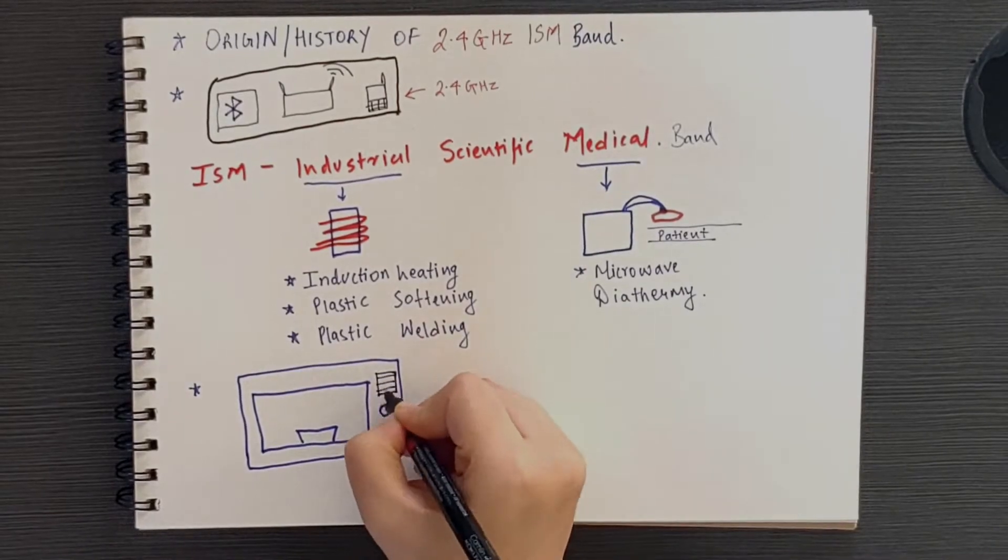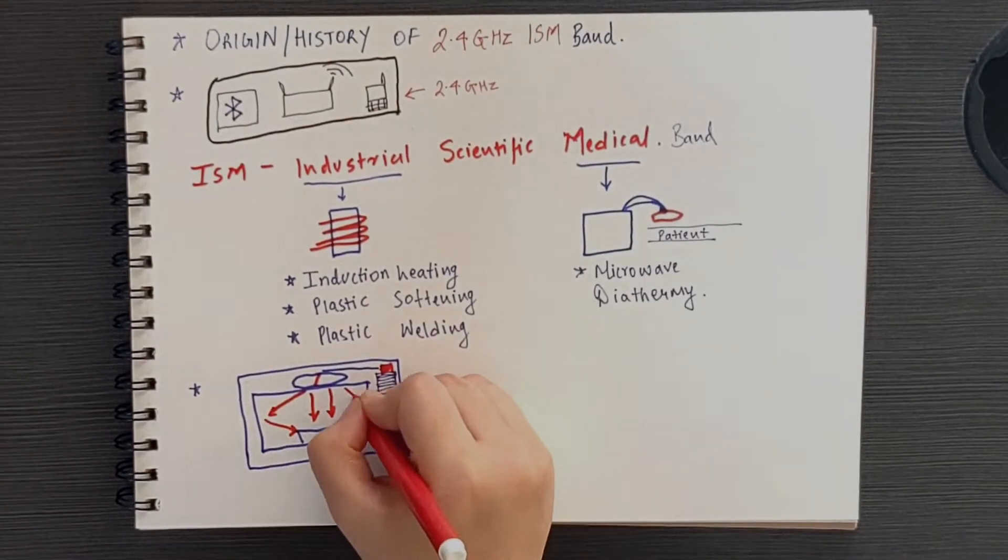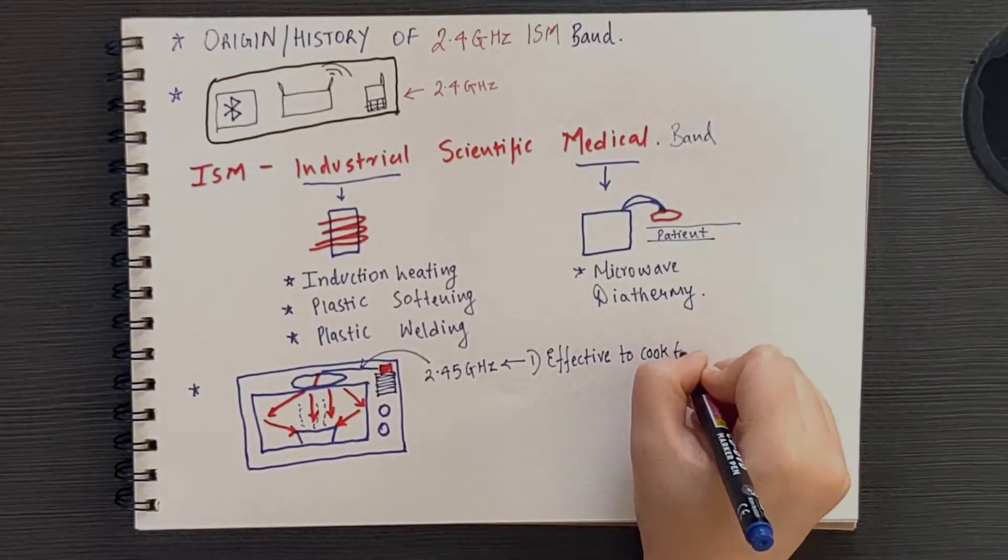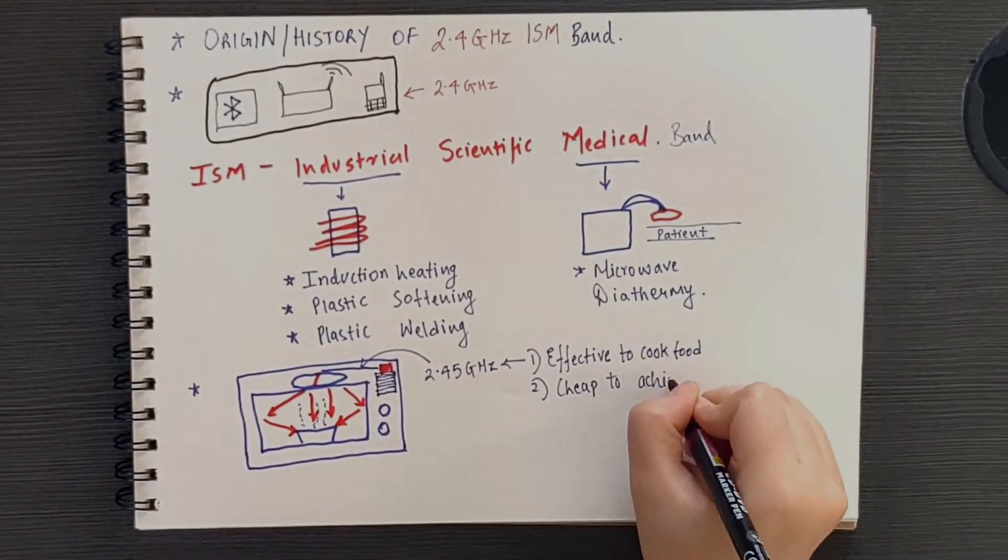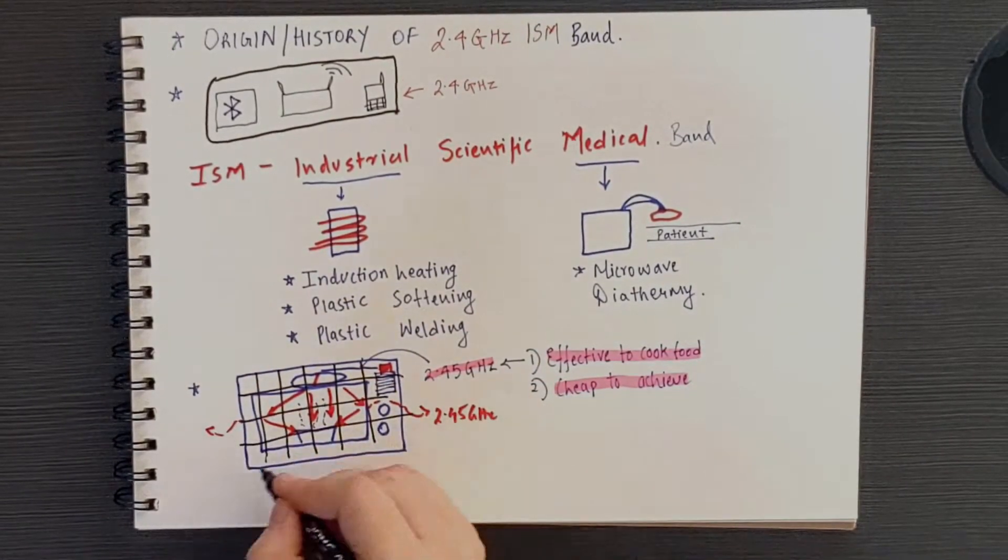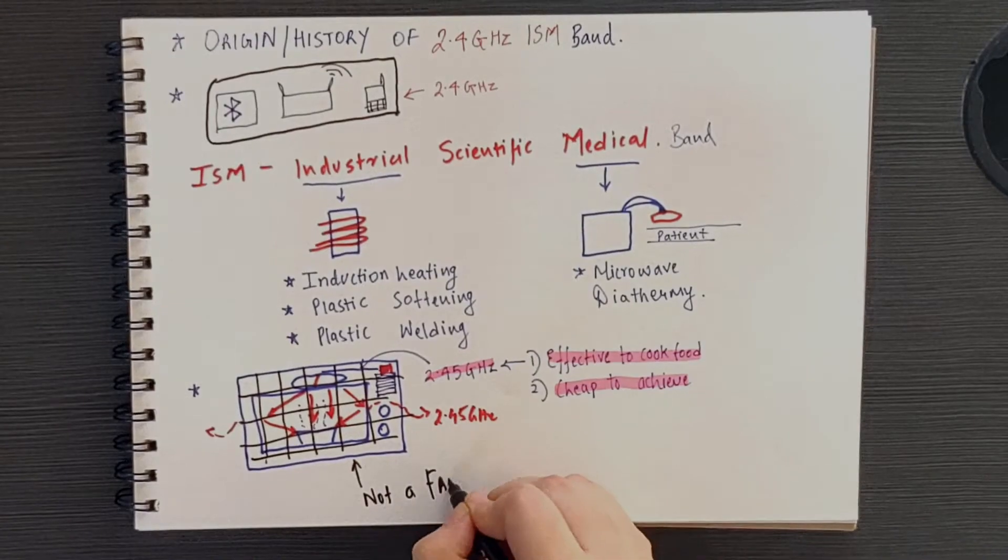The magnetrons in domestic microwave ovens emit microwaves at 2.45 GHz. This frequency is used as it is both effective in cooking your food and cheap to achieve. Now despite heavy shielding, microwave ovens leak this frequency as they aren't a perfect Faraday cage.